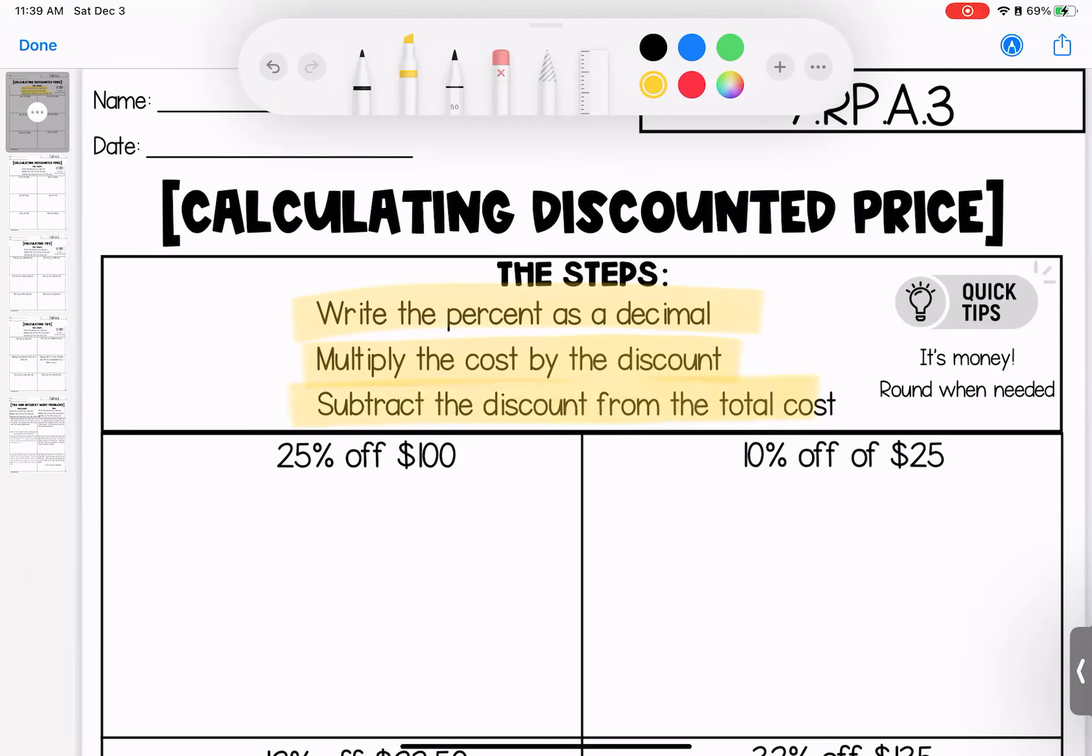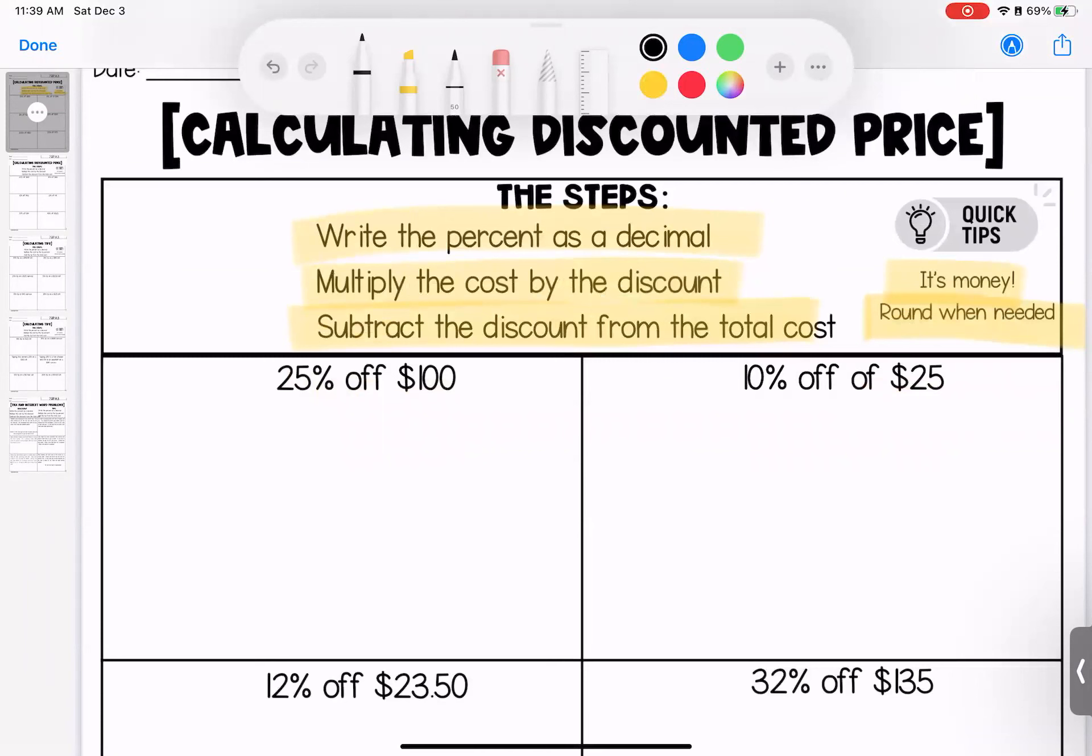Now, as we're going over the answers, I'm giving you what the discount would be after you multiplied, and then what your total should be after you've subtracted. Just a quick tip, remember that it's money. So some of these you're going to have to round. Money only has two decimal places. Since we are using math machines, I'm going to talk about what we could put into our calculator. But as always, if you have additional questions, please bring them with you to class.